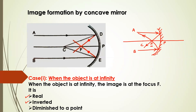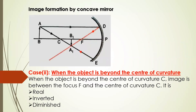You can refer to this step by step on how to draw the diagram. Now we can move on to the next case wherein the object is beyond the center of curvature. This is your center of curvature, and the object AB is placed beyond the center of curvature. First, start drawing with the mirror — make a curve and show the silver lining.